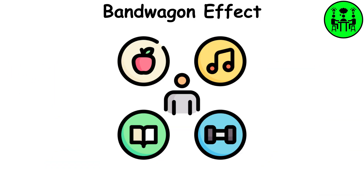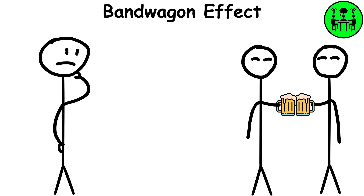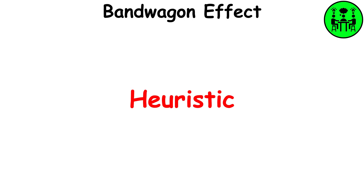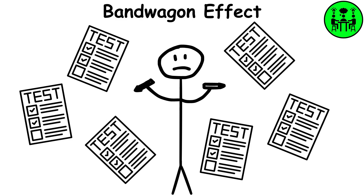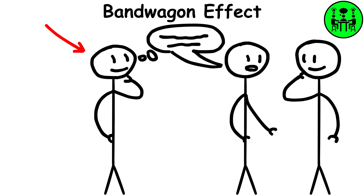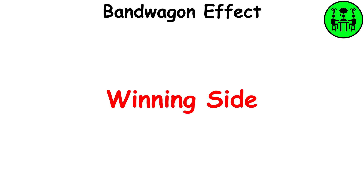Bandwagon effect. This refers to our habit of adopting certain behaviors or beliefs because many other people do the same. The bandwagon effect serves as a heuristic by allowing us to make decisions quickly, to avoid standing out and being excluded. Many of us support the behaviors or ideas of the groups we find ourselves in, and we accept the majority opinion because we want to be on the winning side.